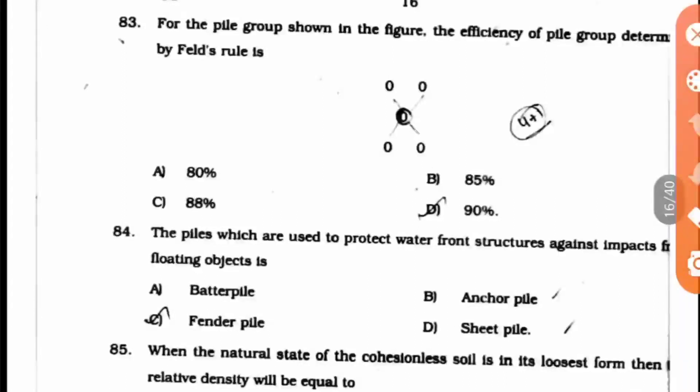Before going into this, let's see what is Fell's rule. The efficiency of the group pile gets reduced by 1/16th of the number of contacts with adjacent piles, hence it is known as the 1/16th rule. It only determines the reduction in efficiency based on how many adjacent piles are there.